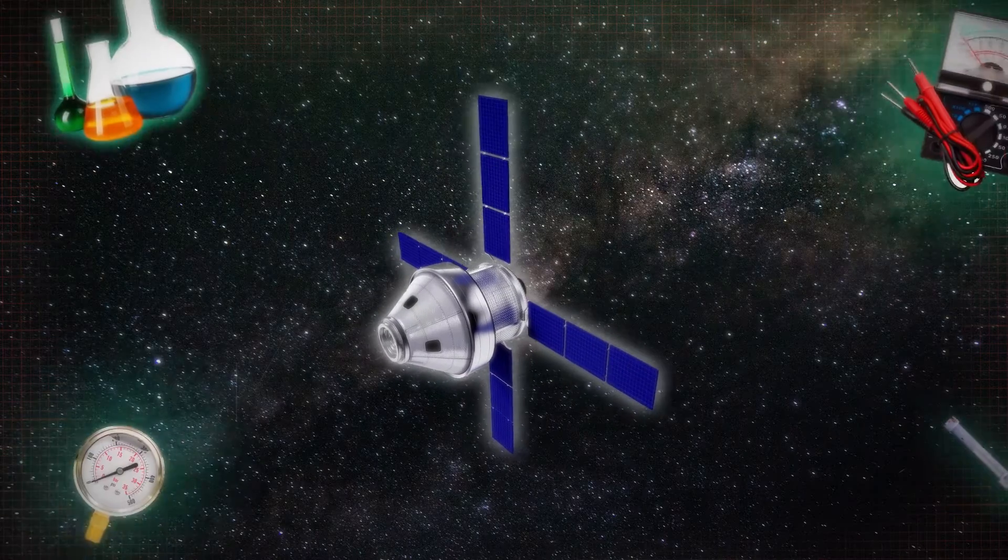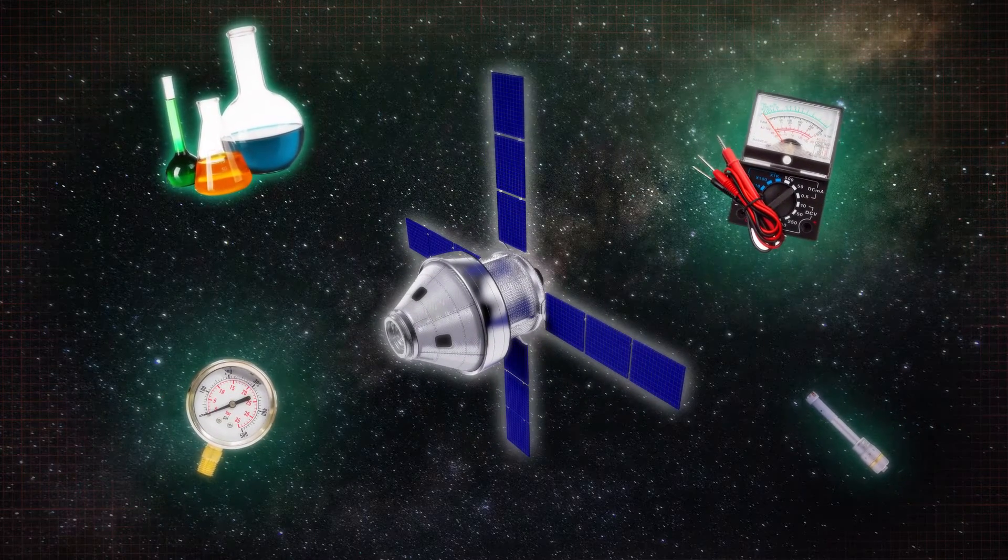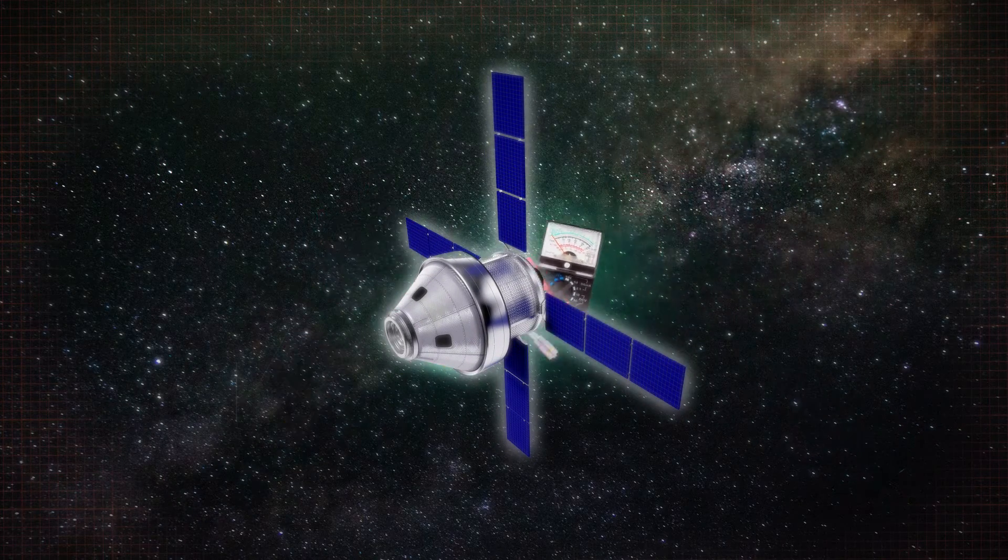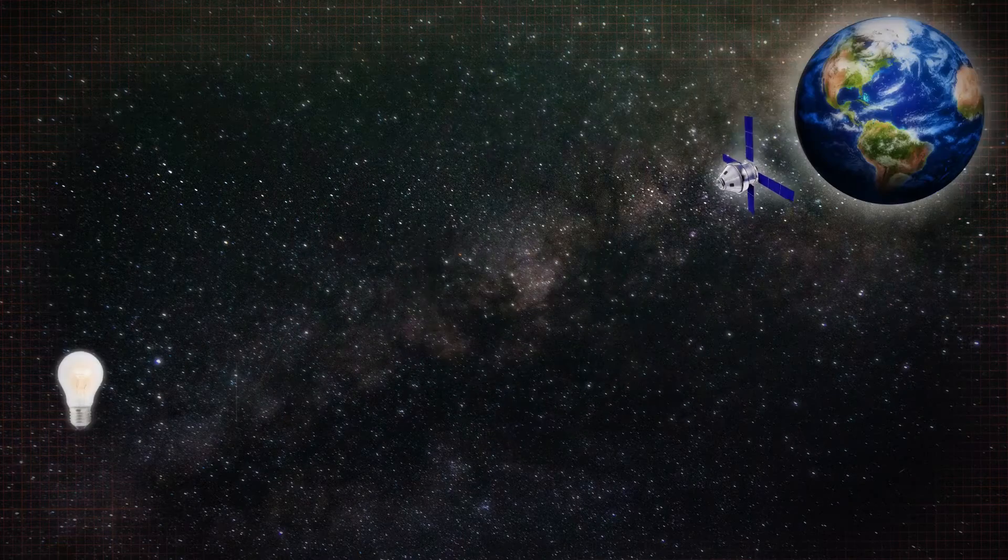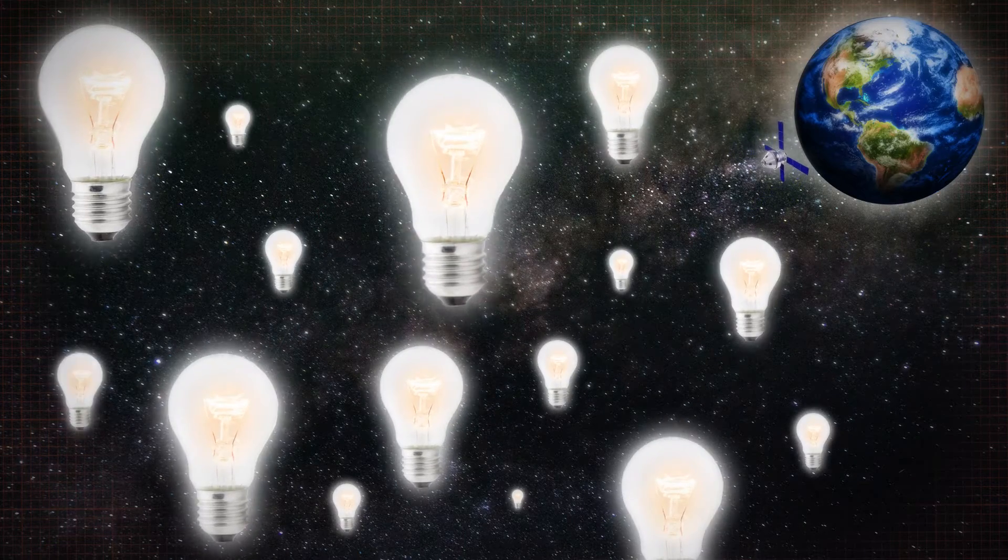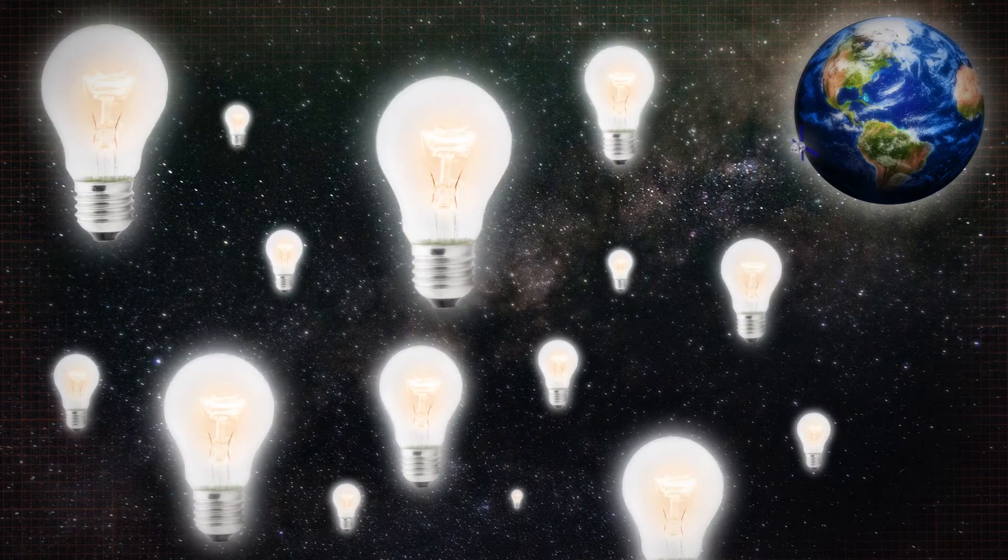So when we heard that the 5th Automated Transfer Vehicle, or ATV-5, was carrying supplies to the International Space Station, we thought observing its final orbit and return journey would be a great opportunity to gather new data.